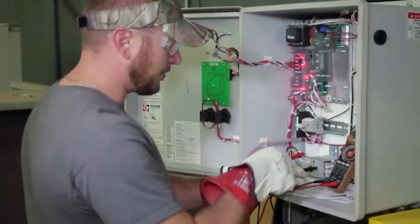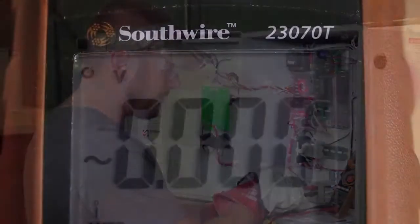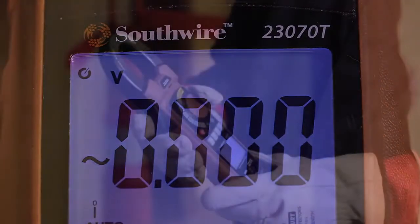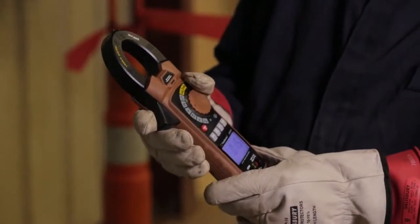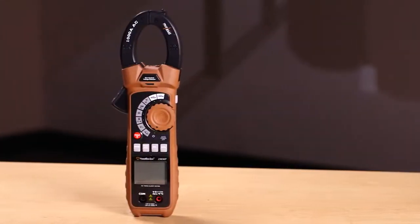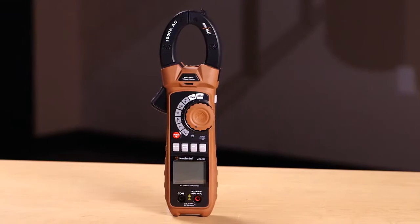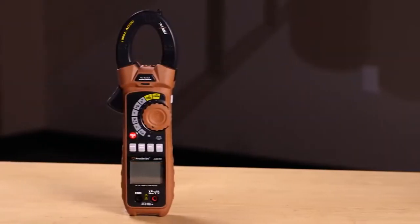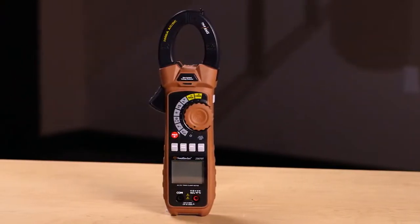Three separate current ranges provide accurate readings on all measurements up to 1000 amps. Readings are taken on a quick response fast zero display saving time in the field. The 23030T measures AC current while the 23070T measures AC and DC current.